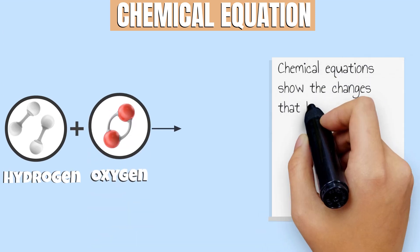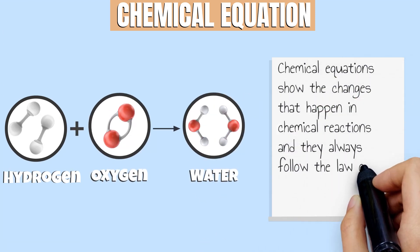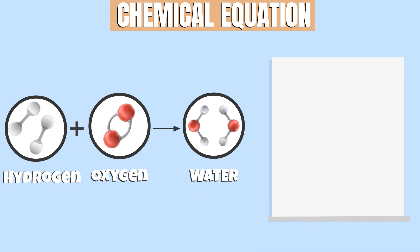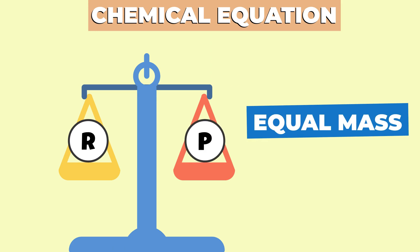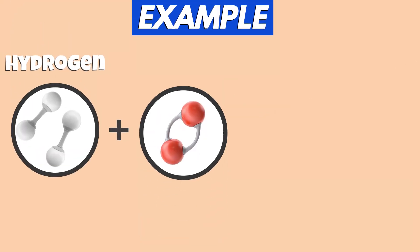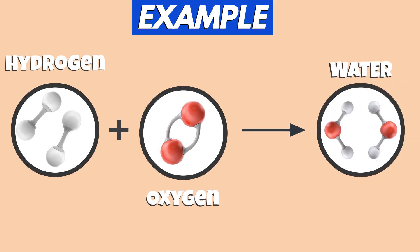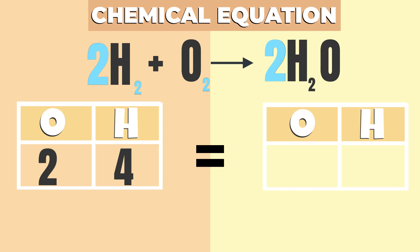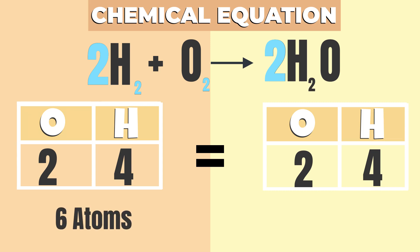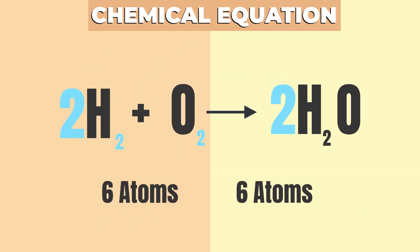Chemical equations show the changes that happen in chemical reactions, and they always follow the law of conservation of mass. This means that the total mass of the reactants is always equal to the total mass of the products. For example, when hydrogen reacts with oxygen and produces water. In this balanced equation, the reactant side has four hydrogen atoms and two oxygen atoms, while the product side has two molecules of water, meaning there are a total of four hydrogen atoms and two oxygen atoms. Since the total mass of the reactants is equal to the total mass of the products, it is balanced and demonstrates the law of conservation of mass.